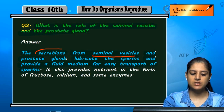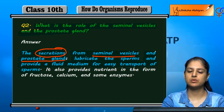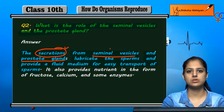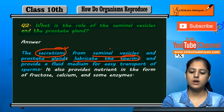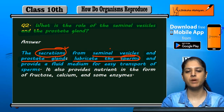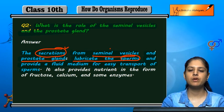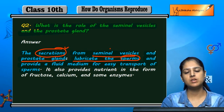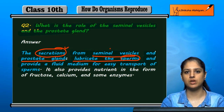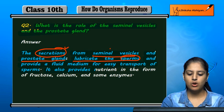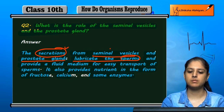The seminal vesicles and prostate glands have secretions that provide lubrication. When lubricated, movement is smooth, so the sperm gets a fluid medium, making transport of sperm very easy and smooth. It also provides nutrients in the form of fructose, calcium, and some enzymes.